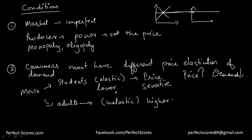This is something you observe in day-to-day life as well — you get student discounts when buying an Apple laptop, for example. They make it cheaper for the student market because it is price sensitive. Consumers must have different price elasticities of demand so that you can charge different prices to different groups.